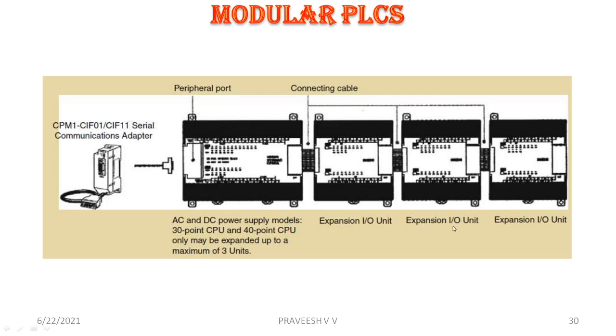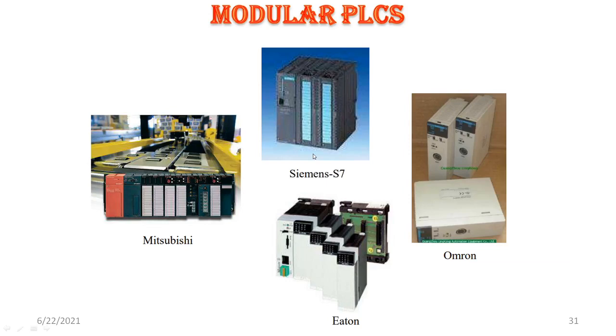In the modular PLC, an expansion IO unit is present — again expansion IO unit, AC and DC power supply modules, etc. Everything is there and can be connected, added, or removed.